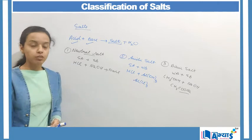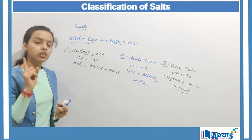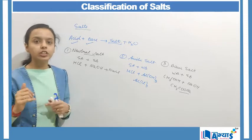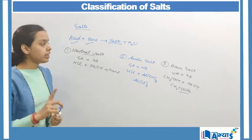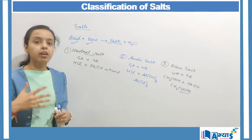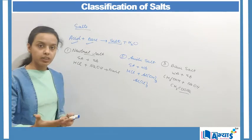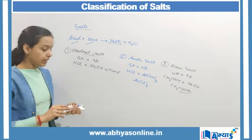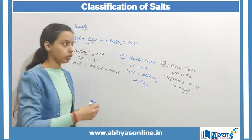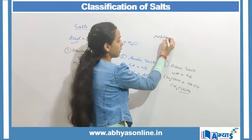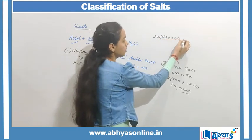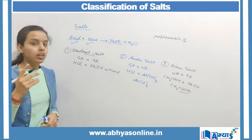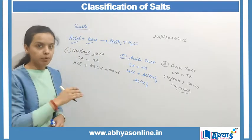We have now discussed three important classifications of salt depending upon whether the acid or the base is stronger. There is one more important characteristic on which we can define acidic, basic, and neutral salts, and that is the replaceable hydrogen. In those salts, if we have a replaceable hydrogen left, it is referred to as an acidic salt.